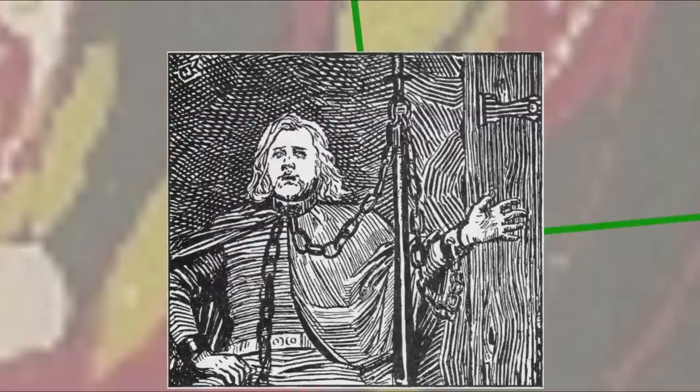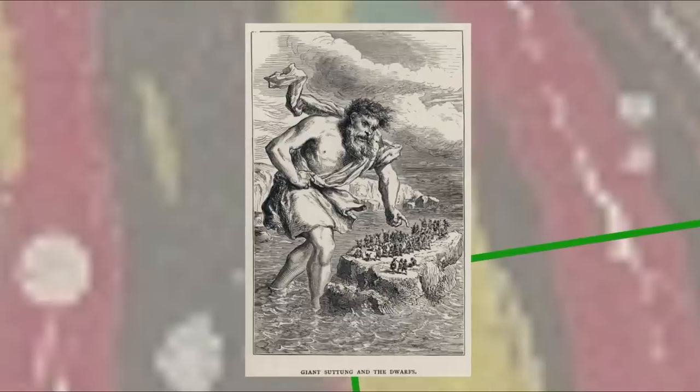They also killed two giants, and when Suttungr, the son of those giants, came for revenge, the dwarfs bought their safety by giving him the mead. Later, the god Odin came in disguise to recover the mead,